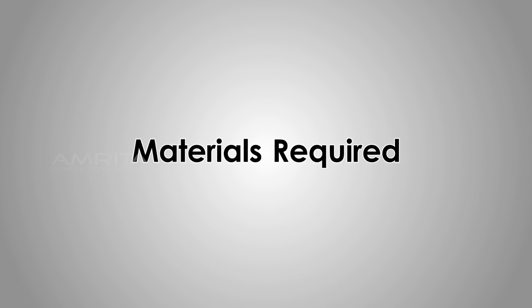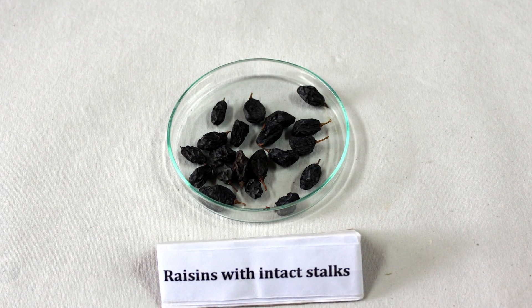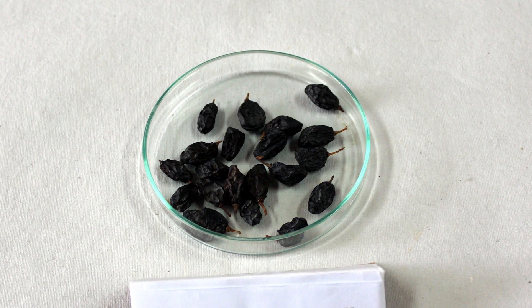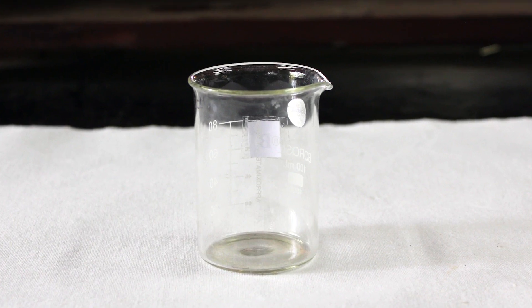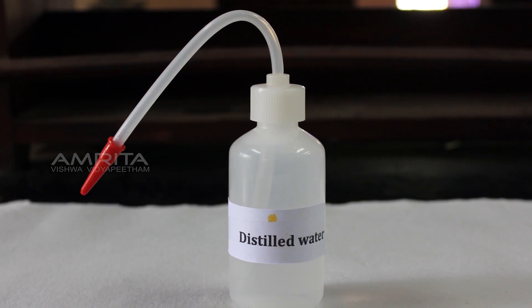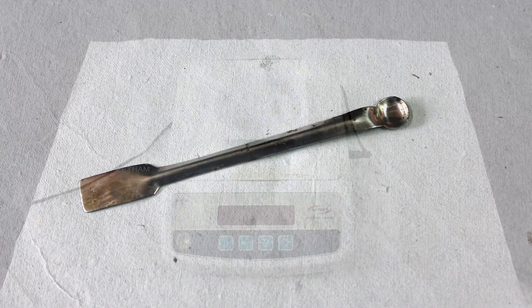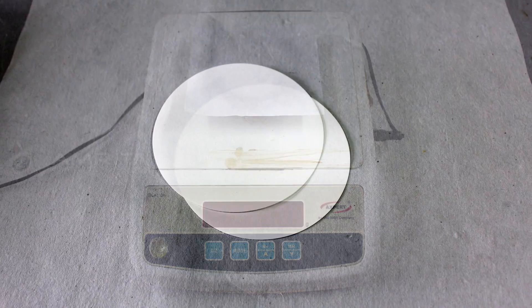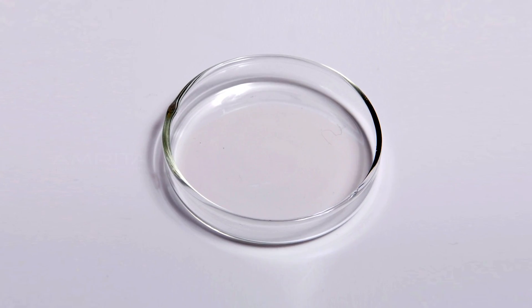Materials Required: about 30 raisins with intact stalks, a small beaker, distilled water, spatula, electronic balance, blotting paper and a Petri dish.